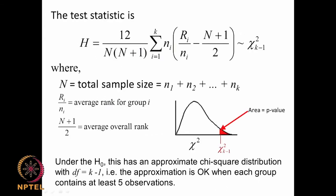The test statistic H is 12 divided by N(N+1), where N is the total sample size, multiplied by the summation from i=1 to k of: ni times (Ri/ni minus (N+1)/2) squared. Here ni is the number of samples in the i-th group and Ri is the sum of ranks for group i. Under the null hypothesis, this follows an approximate chi-square distribution with degrees of freedom equal to k minus 1, where the approximation holds when each group contains at least 5 observations.